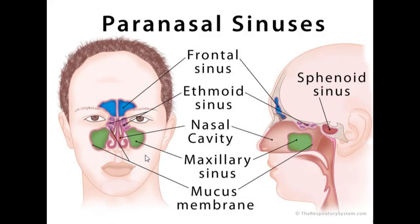So today it's all about the paranasal sinuses. We have four paranasal sinuses: the frontal sinus, the maxillary sinus, the sphenoid sinuses, and the ethmoid sinuses. I call them the FEMS — frontal, ethmoidal, maxillary, and sphenoid sinus. I'm going to tell you a little bit about them as well as their nerve supplies.